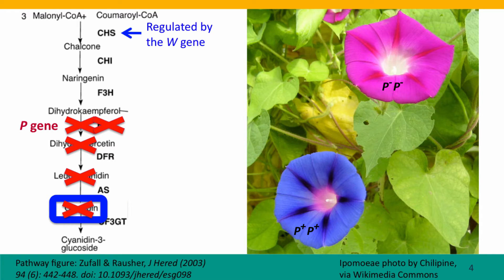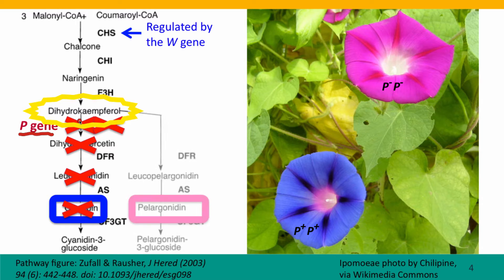What happens next is parallel to what I described when we talked about phenylketonuria — mutations in the gene for phenylalanine hydroxylase. Now that this part of the pathway is blocked by a mutation in the P gene, the substrate for this enzyme accumulates. It's called dihydrochemphorol. And this substrate is converted by a parallel pathway into the bright pink pigment called pelargonidin, which gives the pink morning glories their color.